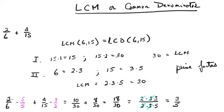we will convert 2/6 to 30ths by multiplying by 5/5 and getting 10/30, and we will convert 4/15 to 30ths by multiplying by 2/2, which converts 4/15 to 8/30.